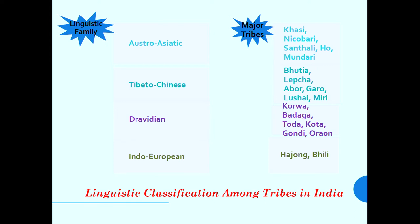Languages like Korwa, Badaga, Toda, Kota, Gondi and Oraon belong to Dravidian communities, and Hajung and Bhil belong to Indo-European communities. Even some tribal languages like Santhali are in the scheduled languages of India, and in some UPSC examinations tribes even have the right to write answers in that language.